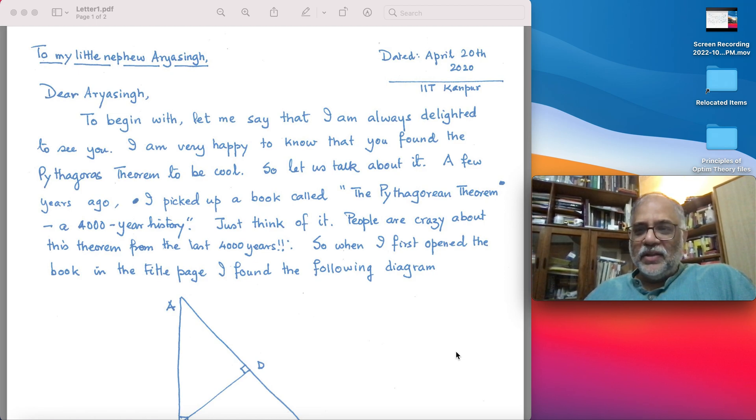My nephew is in the tenth standard. He thinks math is pretty cool actually, and he plans to do computer science in the future. So let's talk about it. A few years ago, I picked up a book called The Pythagorean Theorem: 4000 Years History, which I showed yesterday, written by E.E. Maor. Just think of it—people are crazy about this theorem for the last 4000 years.